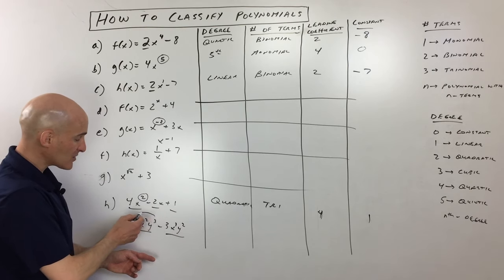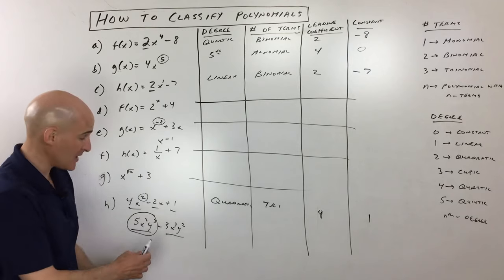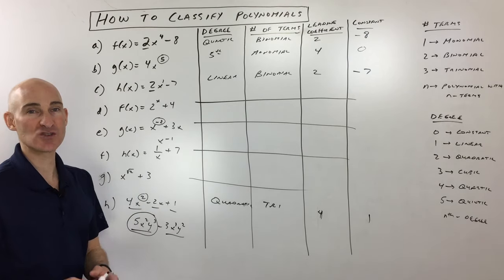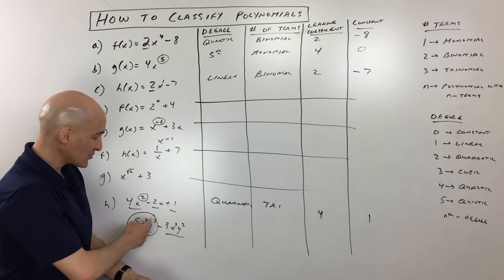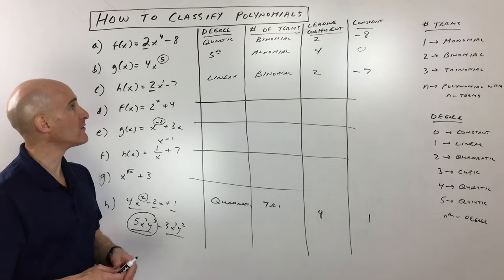So the highest power is 5. This would actually be a fifth degree binomial. So if you have more than one variable, add up those exponents for that particular term. That's a little bit more of an advanced one.